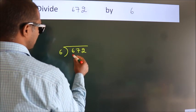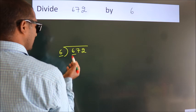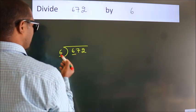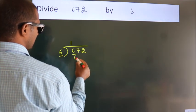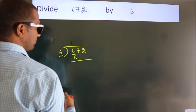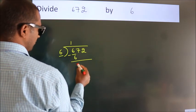here we have 6, here 6. When do we get 6? In 6 table, 6 once, 6. Now, we should subtract, we get 0.